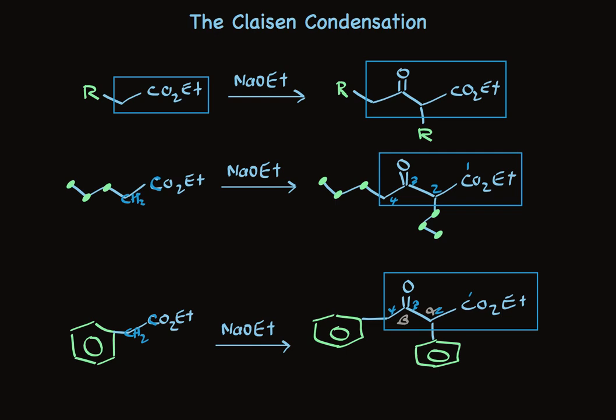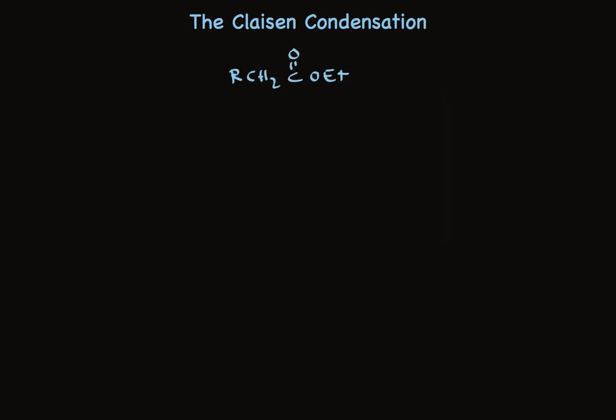Let's take a look at what accounts for this remarkable transformation. When this ester is treated with base, one of the protons alpha to the carbonyl is removed. This makes an enolate. An enolate can act as a nucleophile, so it can add to the carbonyl of another molecule of ester.